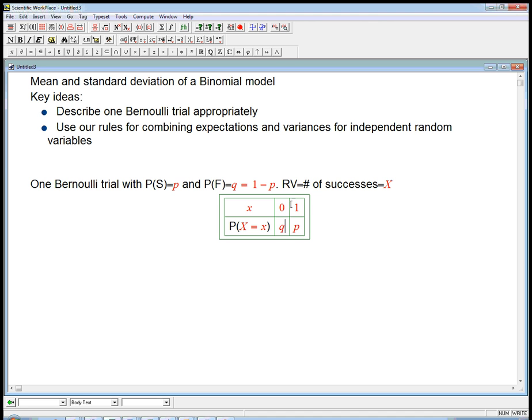Instead of labeling success with the letter s and failure with the letter f, we label success with a one and failure with a zero. The reason for that is that s's and f's don't add up. One plus one plus zero will. When I combine a bunch of Bernoulli trials together, the number of successes for n trials is just the sum of those guys. That's really the key idea.